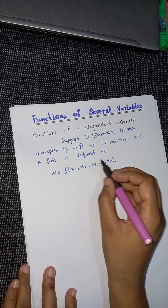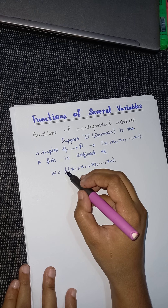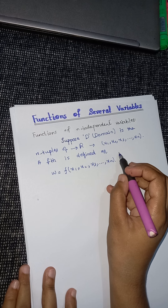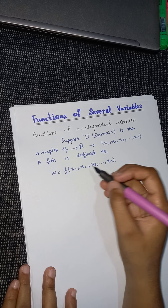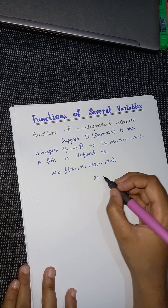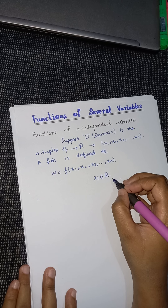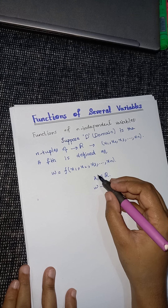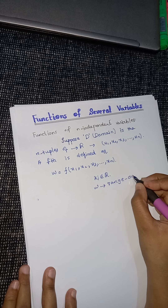If we put all our x values, then we will get w. Our w will give us our range, and x₁, x₂, x₃, up to xₙ belong to the domain. If we denote all the xᵢ, and say that each xᵢ belongs to the real numbers, then all xᵢ are the input values and w — the answer after putting these values — would be the range of the function, or we can say it is the output value.